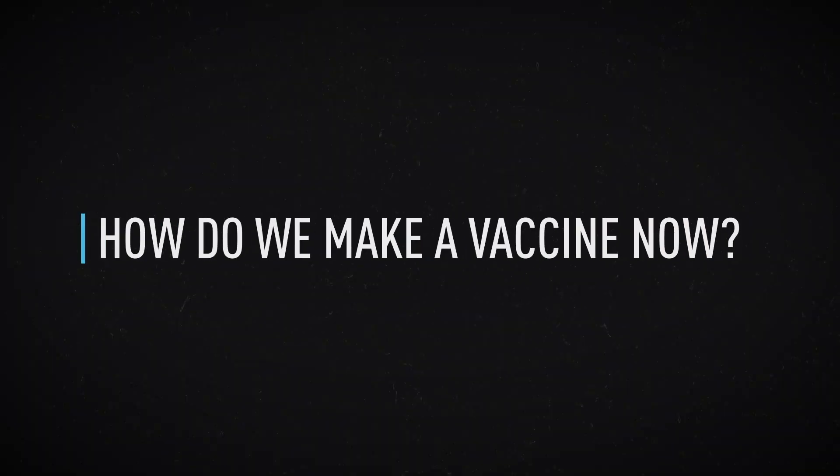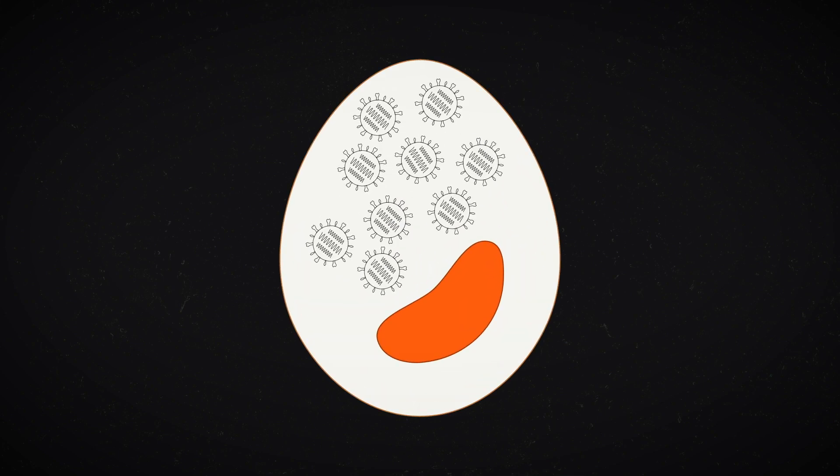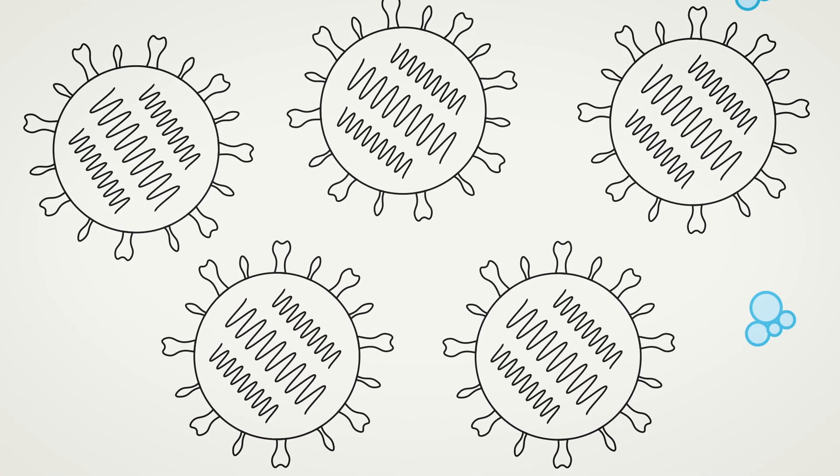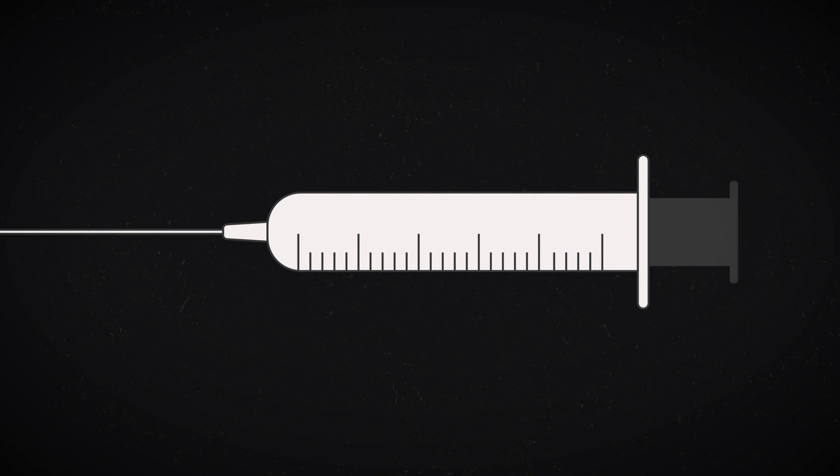So how do we make a vaccine now? Well, we still use eggs. The virus is injected inside the egg and allowed to propagate. It's then extracted and washed with detergent, exposing the genetic material to inactivate it. The hemagglutinin and neuraminidase are purified and then syringed into your body.